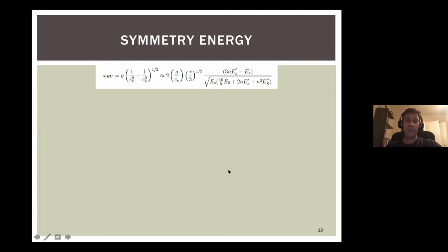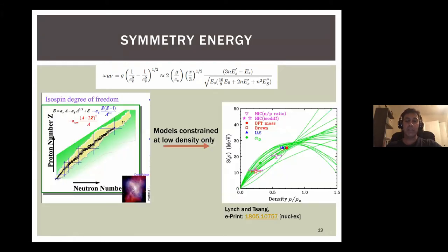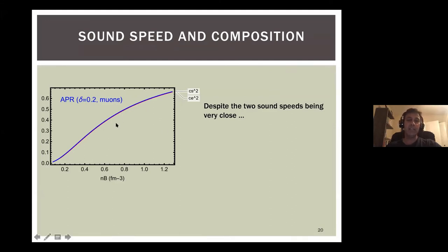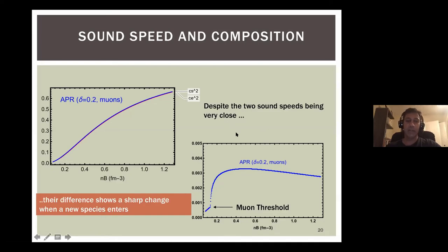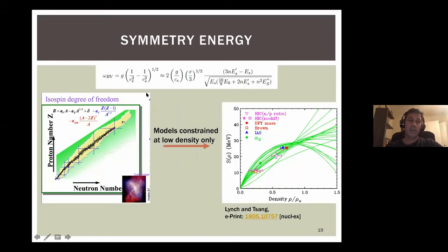But what happens with muons? If you plot c_e² and c_s² individually they look very close, but the difference shows a spike right where you have the muon threshold. Just when muons come in, the difference between the two sound speeds shows a marked rise, which means the Brunt-Väisälä frequency changes sharply, which means the g-mode frequency changes sharply. Therefore we have an oscillation mode that is clearly sensitive to composition — it can theoretically tell you the difference between having muons and not having muons.